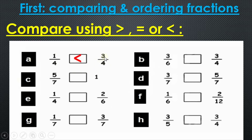Three over four is bigger — three beats one. Question number b: three over six or three over four. This time the numerators on top are equal. When the numerators are equal, the smaller denominator wins. So three over four is bigger than three over six. Bravo! Rule: if the denominators are equal, the bigger numerator wins; if the numerators are equal, the smaller denominator wins.